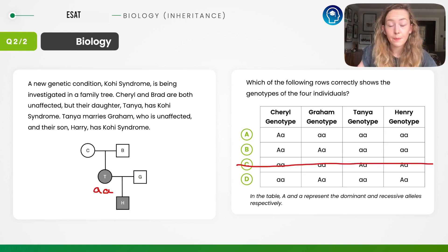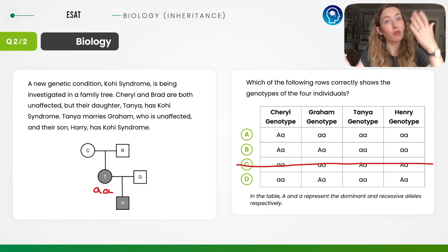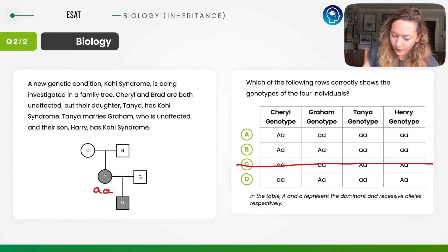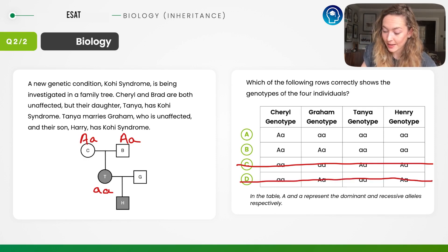Then because Tanya is lowercase a lowercase a, she has to have been given a recessive allele from each parent. So both parents, because they're unaffected but they have a recessive allele, they must be carriers. They must be heterozygous. So uppercase A lowercase a, uppercase A lowercase a. Again, what can we eliminate here? Well, we've got Cheryl's genotype. We can eliminate option D because that has her as recessive and she'd obviously have the condition if that was the case.